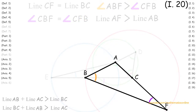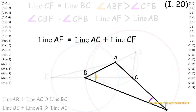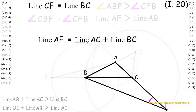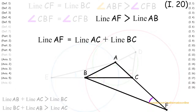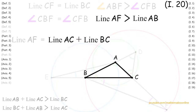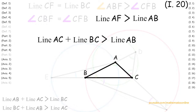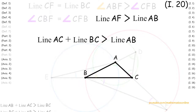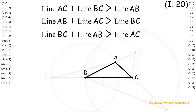So looking at line AF, we can see that it is congruent to the sum of line AC plus line CF. Since line CF is congruent to line BC, then line AF is congruent to the sum of line AC plus line BC. Since we also have that line AF is greater than line AB, then line AC plus line BC is greater than line AB. And so finally, we have proved that the sum of any two sides of a triangle are always greater than the remaining side.